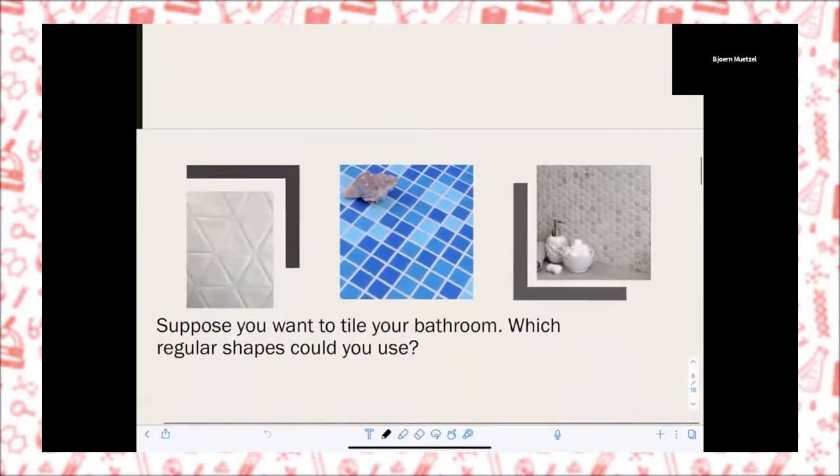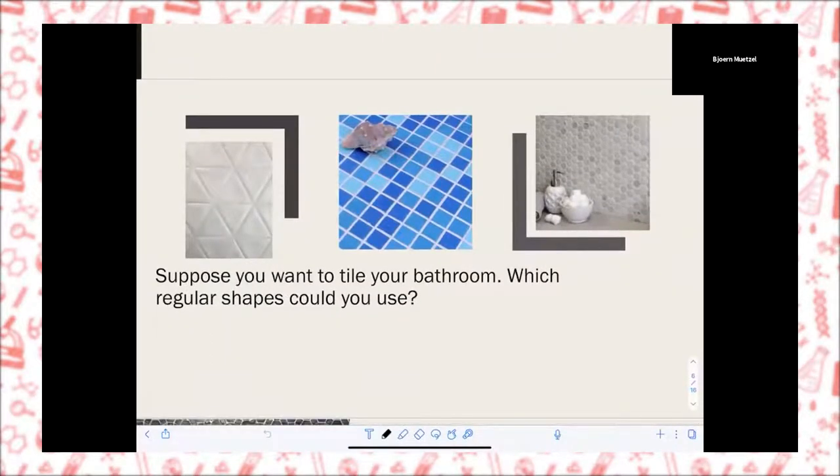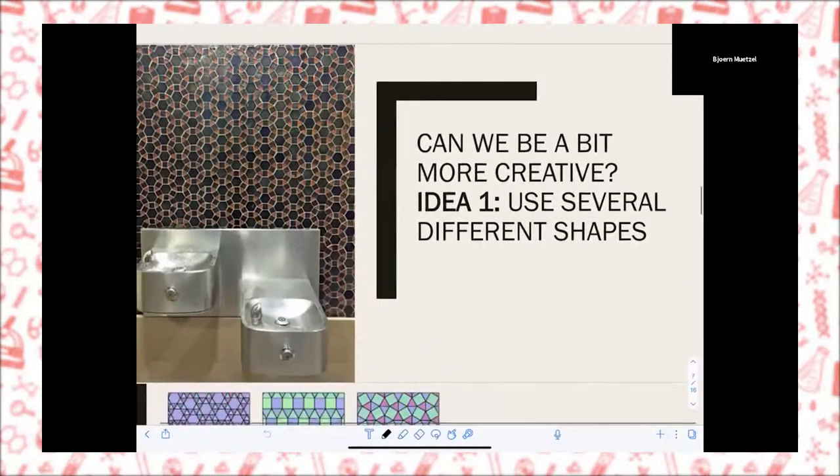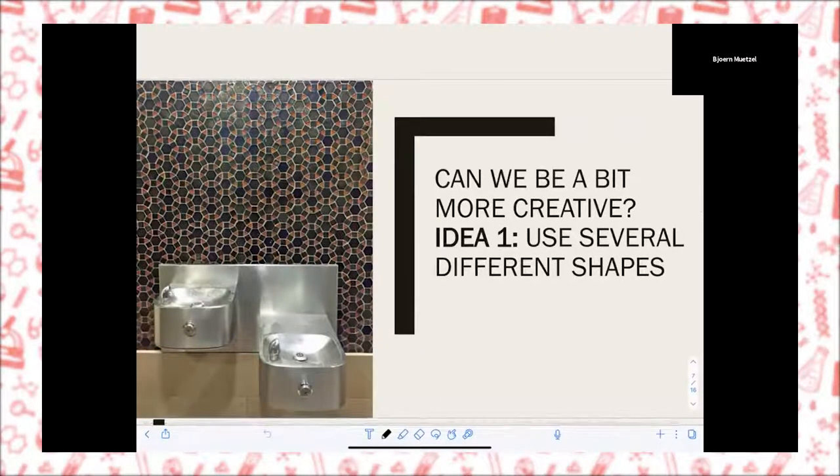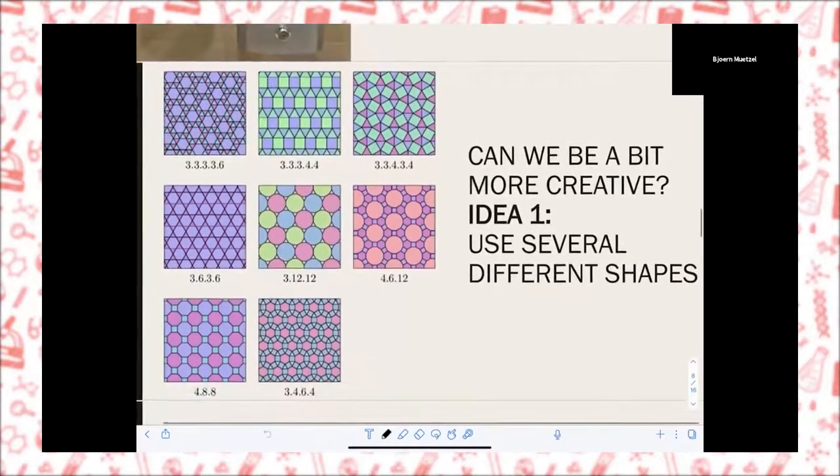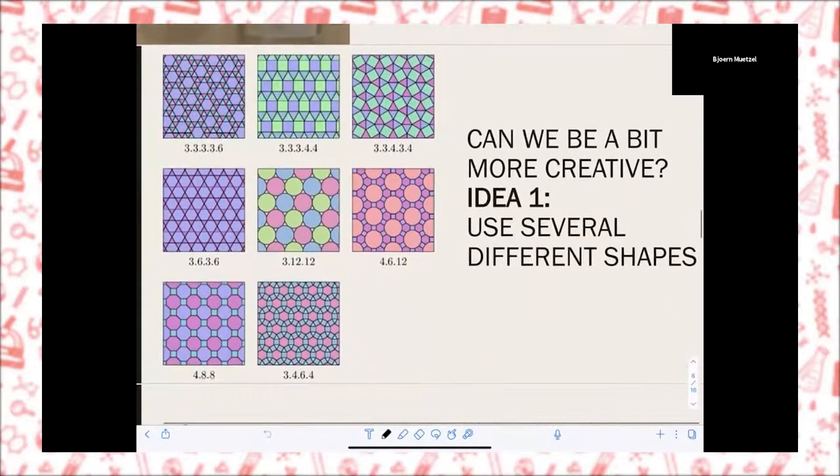That's the way how you can figure out which ones work and which ones do not work. You take the pieces and put them together in a corner, and then it either works or it doesn't. If it doesn't work, you discard it, and if it works, you try more. People have tiled their bathrooms with triangles, with squares, or with hexagons.